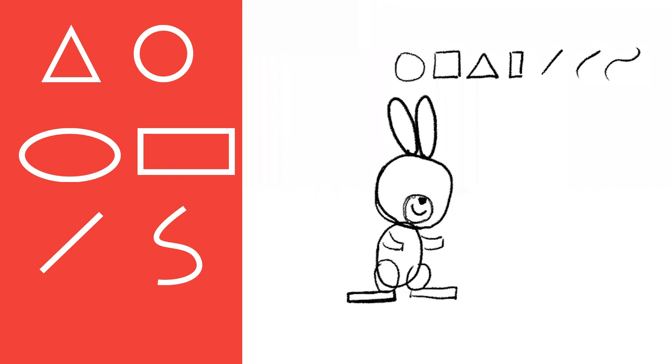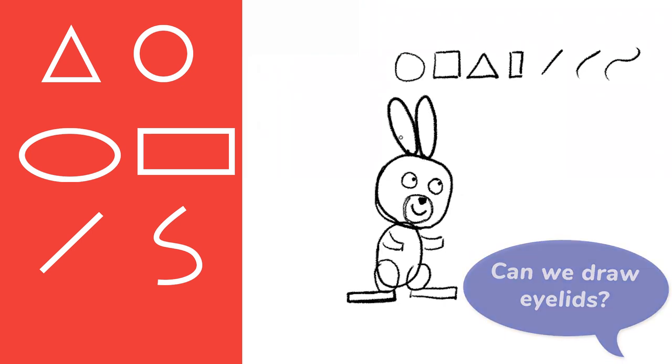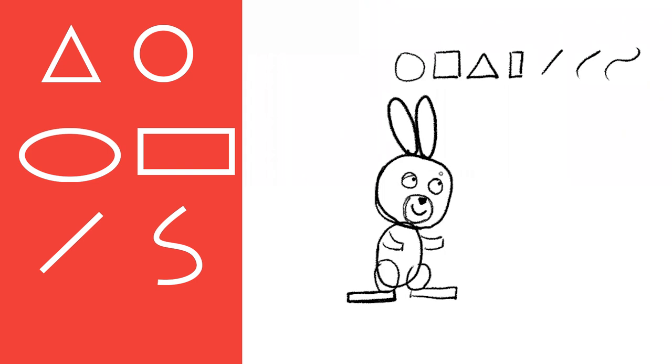How do we draw eyes? Two circles. And what's inside? Oh, the eyelids, you're saying like this? Okay. You can also add two curved lines for the eyebrows.